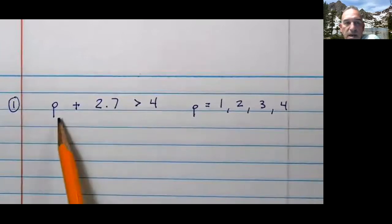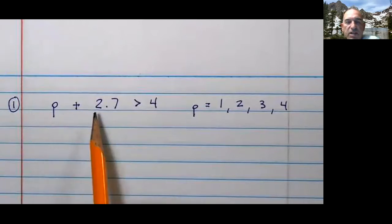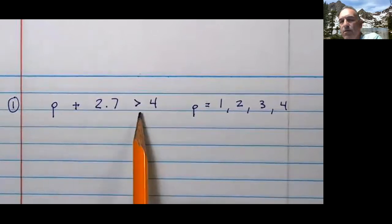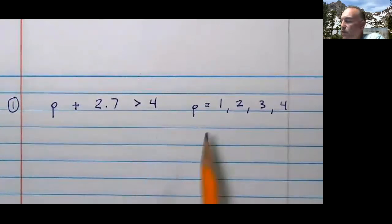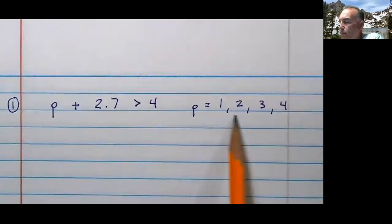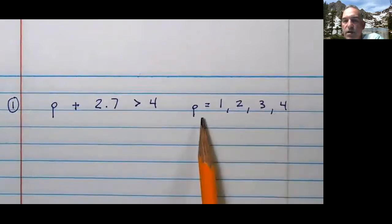Notice you have P, whatever P is worth, P plus 2.7 is greater than 4. Then you're given some values for P. They're telling you if P equals all of these, which one is the solution?